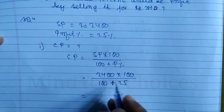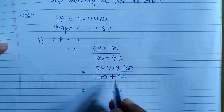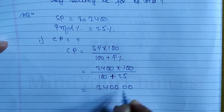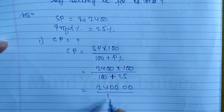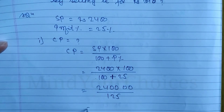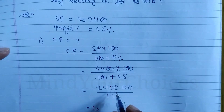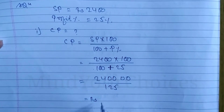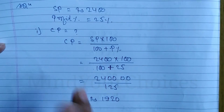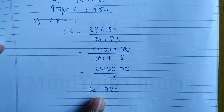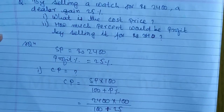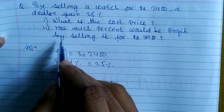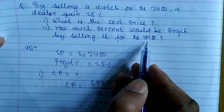Now multiply and simplify. The 100 in the numerator and denominator cancel out. So we calculate 2400 divided by 125, which gives us 1920. So the cost price of the watch is equal to Rupees 1920.